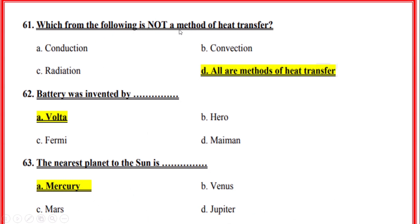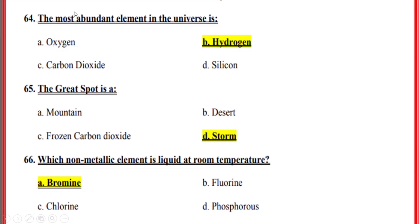Which of the following is not a method of heat transfer? Correct option D — all are methods of heat transfer: conduction, convection, and radiation. Battery was invented by — correct option A. The nearest planet to the sun is — correct option A — Mercury. The most abundant element in the universe is — correct option B.